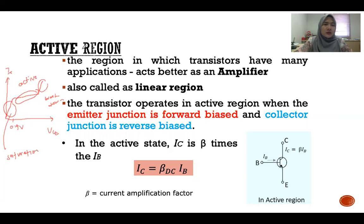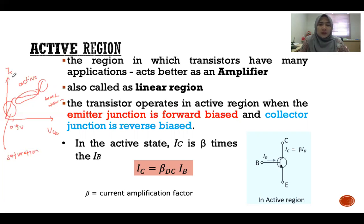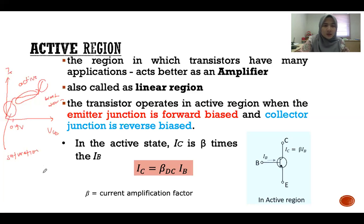This slide explains the active region. The most important region is the active region — it is the region in which the transistor has many applications. Usually, the transistor works in the active region, and in the active region, it acts best as an amplifier. We also call it the linear region. The transistor operates in the active region when the emitter junction is forward biased and the collector junction is reverse biased.